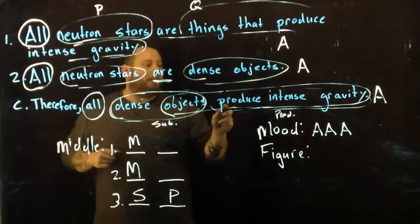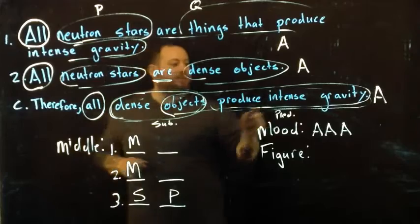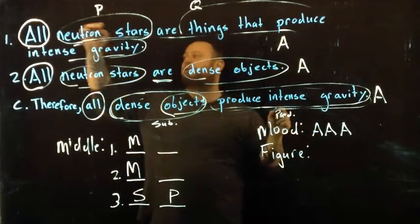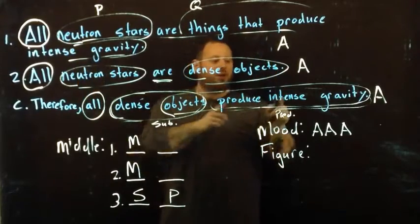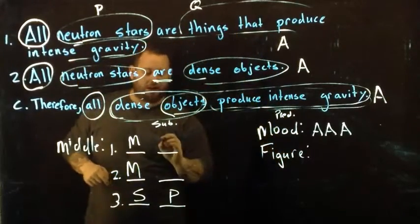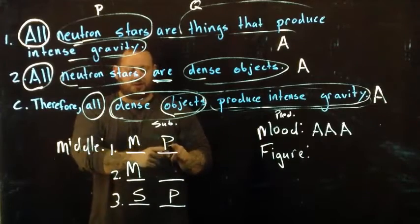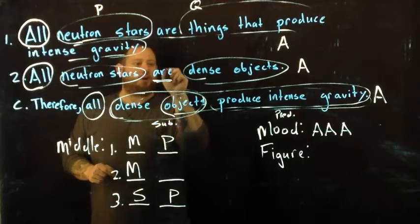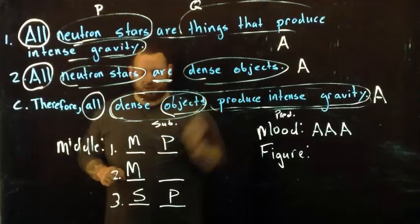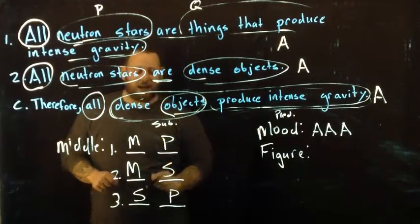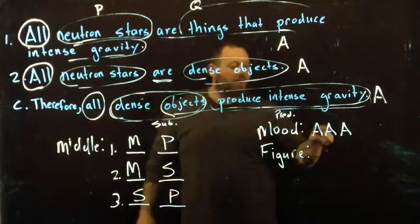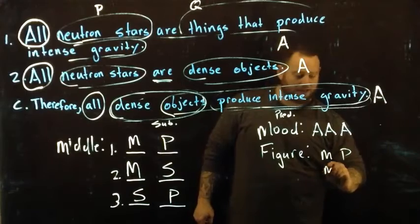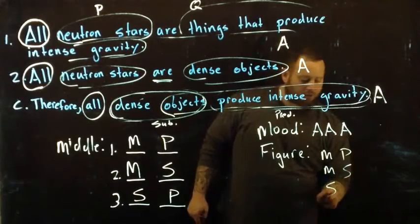We look back at where 'things that produce intense gravity' shows up in our premises. It shows up in our first premise in the second position, so we place the predicate there — first premise, second position. Our subject term 'dense objects' shows up in our second premise in the second position. So now we have a mood of AAA and a figure of M-P, M-S, S-P.